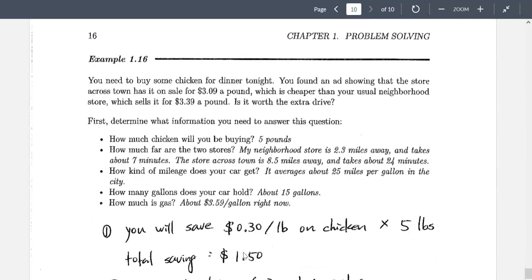Well, here's another example. If you need to buy some chicken for dinner tonight, you find an ad showing that the store across town has it on sale for $3.09 a pound, which is cheaper than your usual neighborhood store, which sells it for $3.39 a pound. Now, is it worth it for the extra drive? Well, if you think about this question, what are some things that we need?